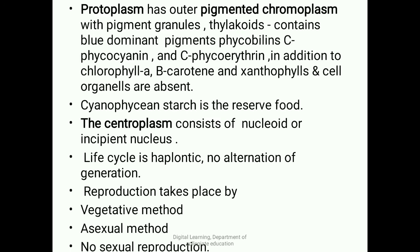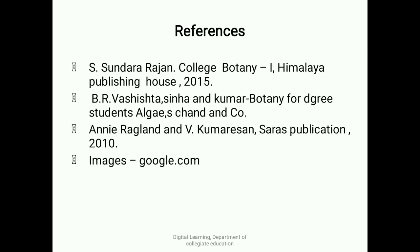The life cycle is haplontic: the plant body is haploid, and there is no alternation of generations. Reproduction takes place by vegetative and asexual methods; there is no sexual reproduction.